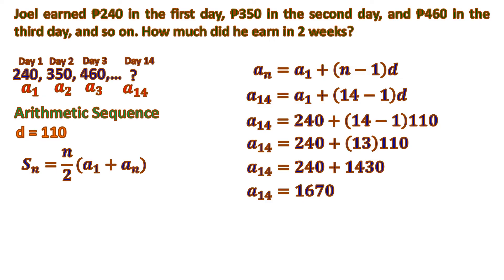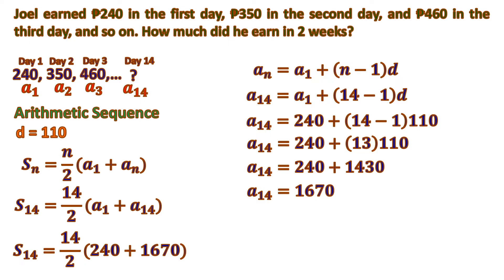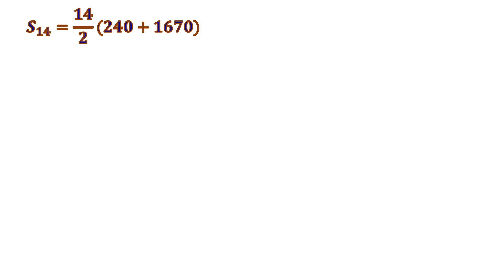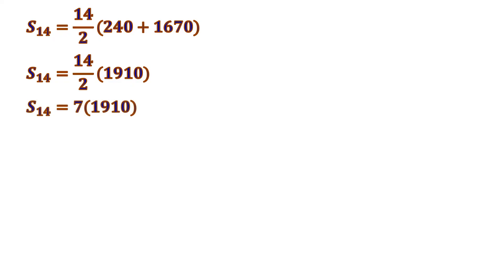So all in all, how much did we earn for two weeks? We substitute n as 14 into the sum formula. The first term is 240 and the last term — the 14th day — is 1,670. Solving the inner part of the grouping symbol: 240 plus 1,670 equals 1,910. Then we take half of 14, which is 7. So 7 times 1,910 is 13,370 pesos. In total, for two weeks, he earned 13,370 pesos.